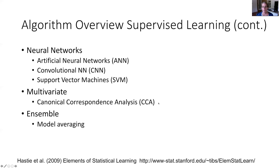Recent developments include joint species distribution models when you have community data on more than one species. Model averaging or ensemble approaches take some type of weighted average between models based on different algorithms. There are also approaches that do ensemble modeling by developing multiple models as part of the process — things like boosting and bagging for decision tree modeling, boosted regression trees, and random forests. They build many simple models with the dataset and when you combine the predictions they tend to produce very robust models.